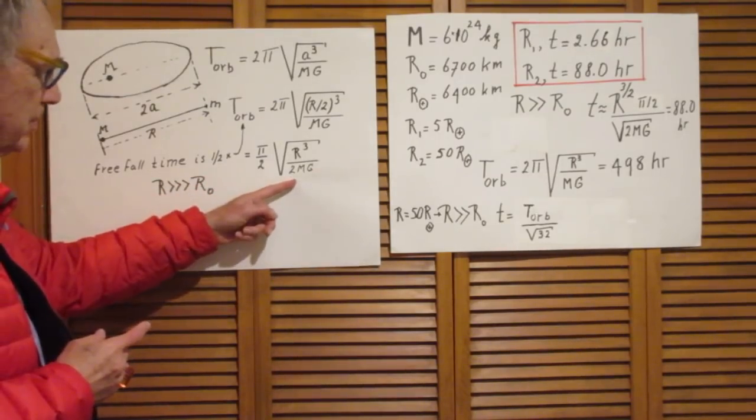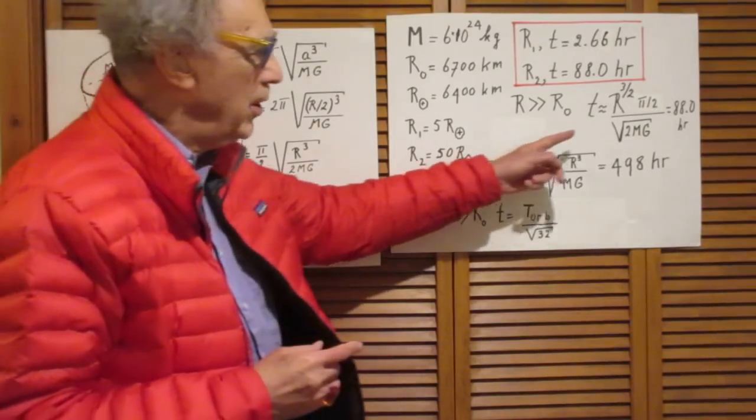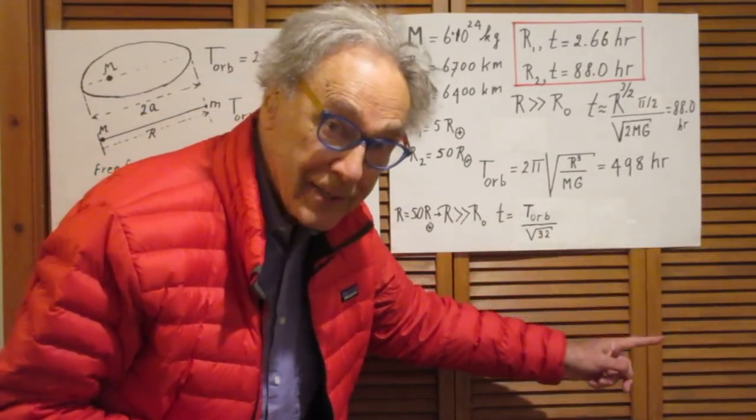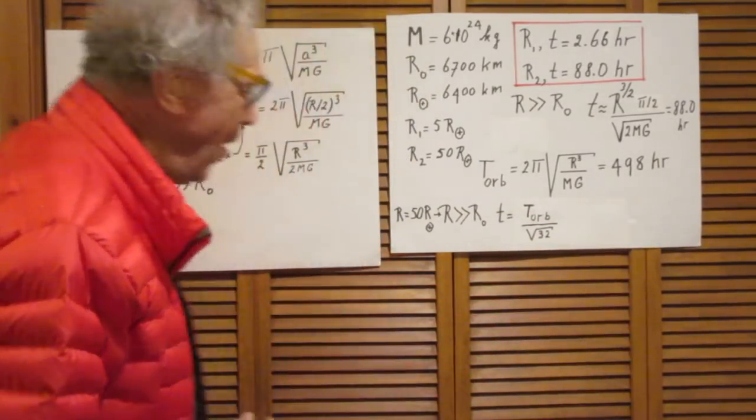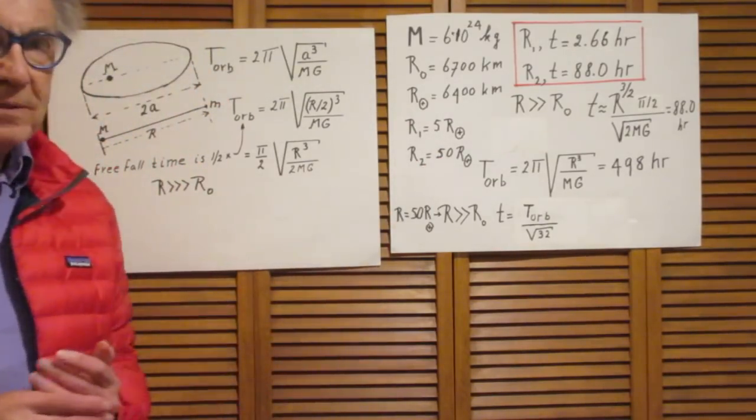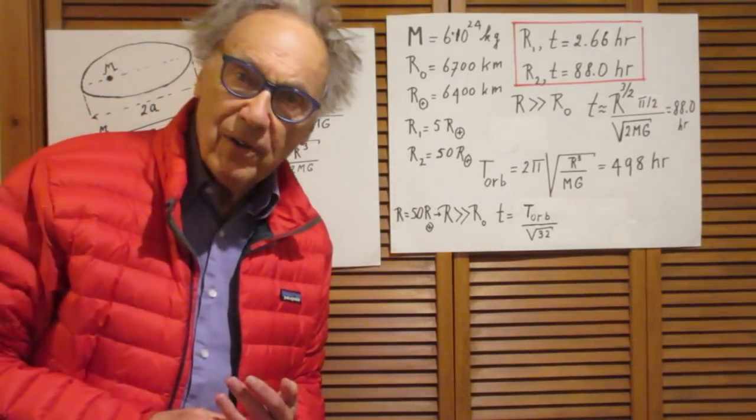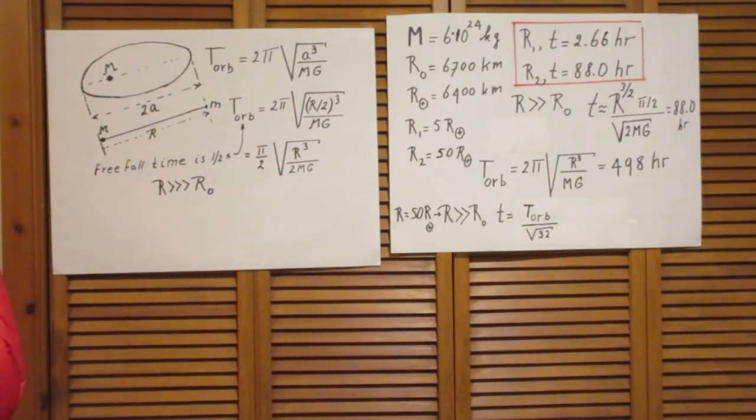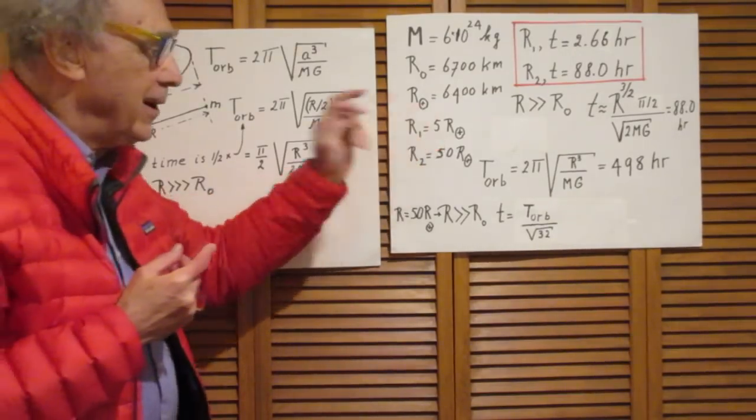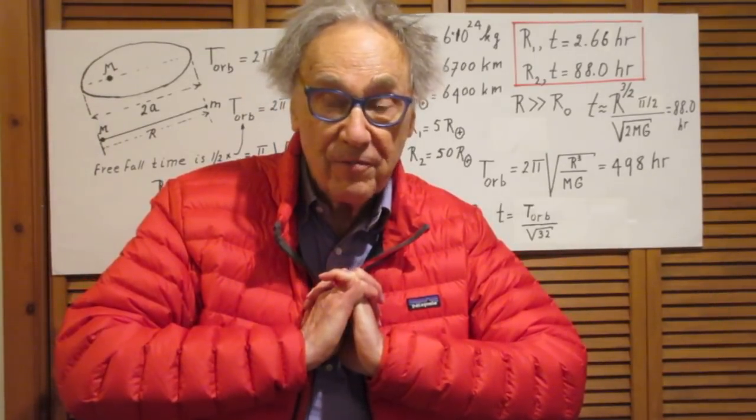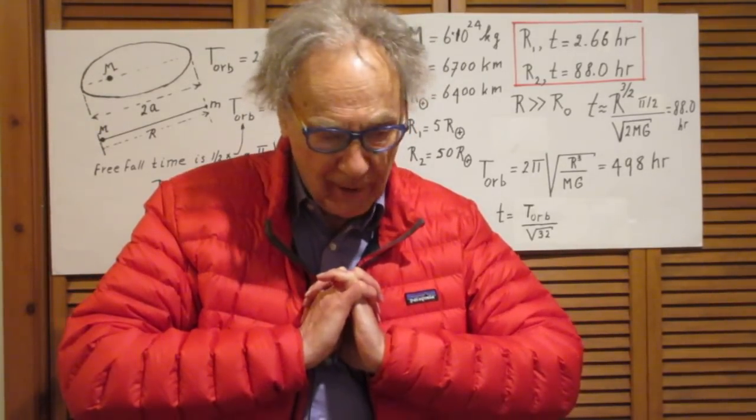Look at this. And look at that. Exactly the same. So you could have found the freefall time in the case of the 50, R is 50 Earth radii by this clever reasoning. But of course you would never have been able to find the freefall time then for the case that R is 5 Earth radii.